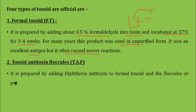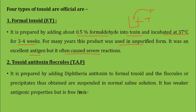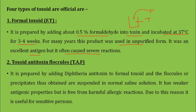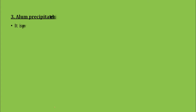The second official preparation is Toxoid Antitoxin Floccules, known as TAF. It is prepared by adding diphtheria antitoxin to the formal toxoid; the resulting floccules or precipitate are suspended in normal saline solution. It has weaker antigenic properties but is free from harmful allergic reactions, making it useful for sensitive persons.